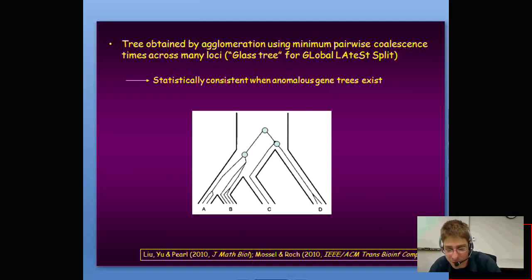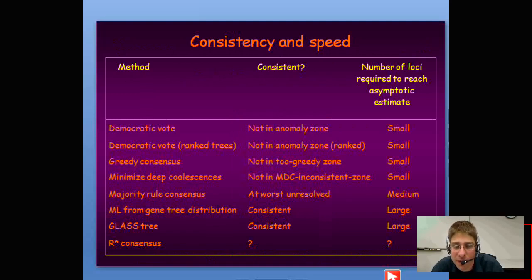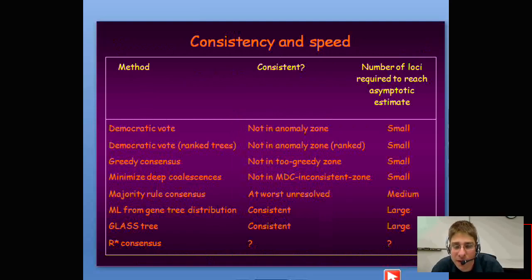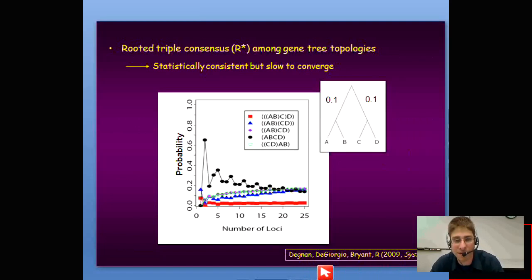The GLASS method or maximum tree is published in two papers: one by Liu, Yu, and Pearl in Journal of Mathematical Biology, and another by Mossel and Roch in IEEE Transactions on Bioinformatics and Computational Biology — another consistent method. R-star consensus was studied along with majority rule consensus and greedy consensus in a paper by Degnan et al. in 2009 in Systematic Biology. This fills out the table of consistency and speed for the eight methods discussed.